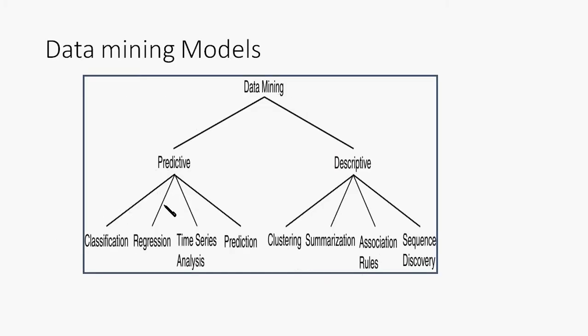What are the different data mining models? Data mining models are the classifier, predictive models, and descriptive models. Predictive models are classification, regression, time series analysis, and prediction. Descriptive models are clustering, summarization, association rows, sequence discovery — all are descriptive data mining models.